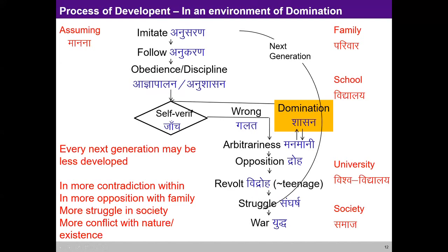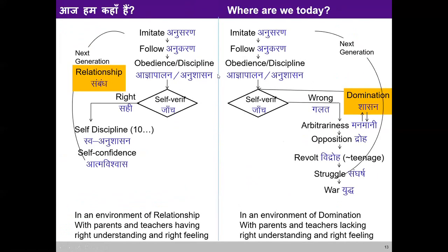The child who becomes a parent now has a child of his own, and since there is already a struggle in the family, the third generation goes through the same path — imitation, following — and is not able to value the parent because the parent is not seen living with happiness, prosperity, and mutual fulfillment. This repeats generation by generation. If you look at society today, it is somewhat like this. Before becoming a parent, we have to have right understanding so that we are able to give the right kind of environment in the family.